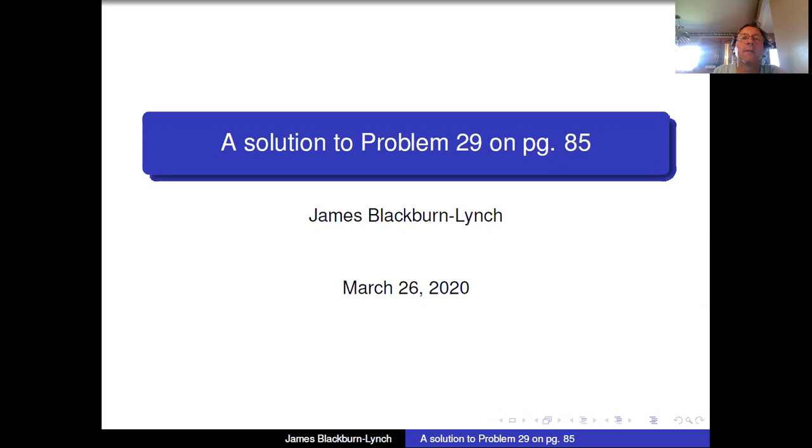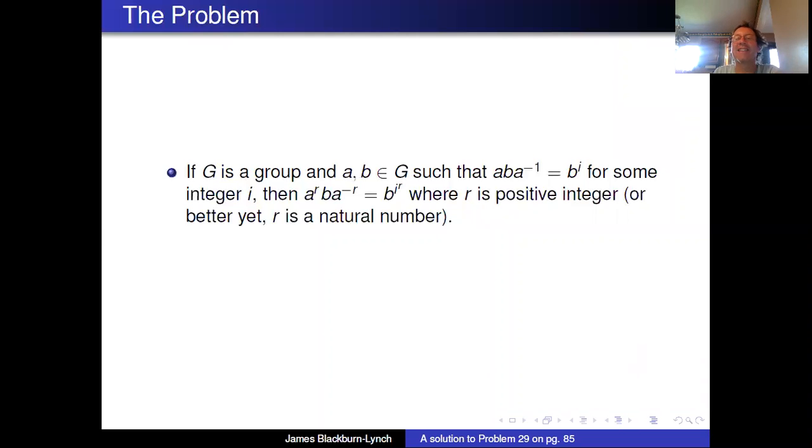The problem says if G is a group and a, b are in G such that aba^(-1) = b^i for some integer i, then a^r ba^(-r) = b^(ir) where r is a positive integer.